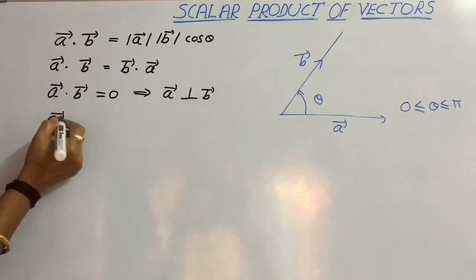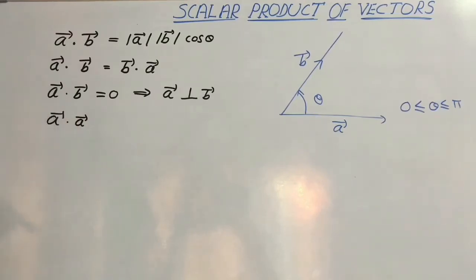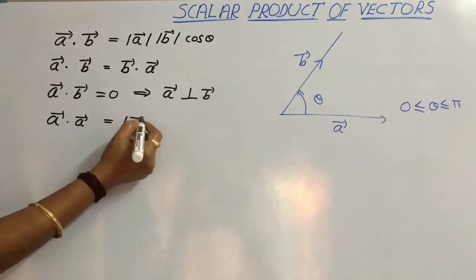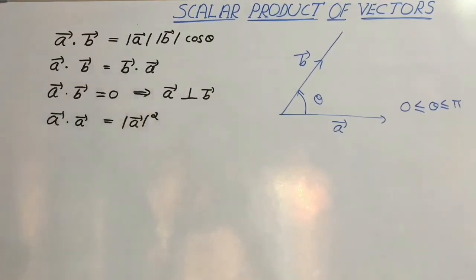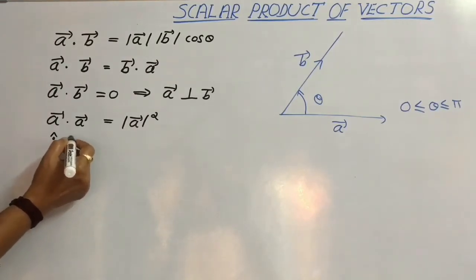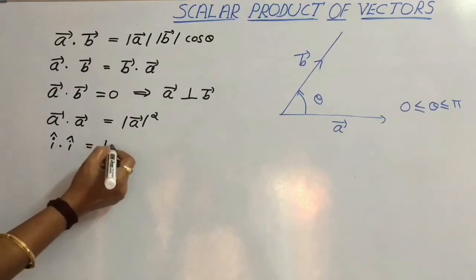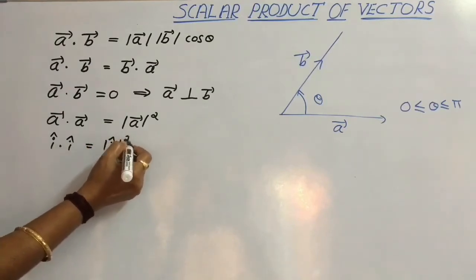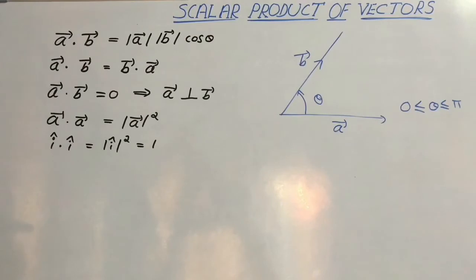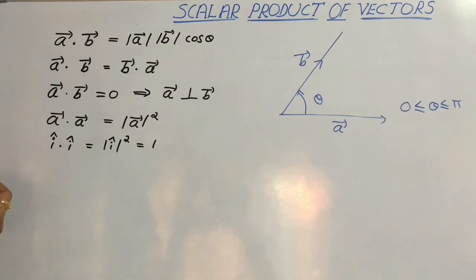If we consider the dot product between the same vector, that is vector A dot vector A, that is equal to mod of vector A squared. Similarly, i dot i equals mod i squared equals 1. Similarly, j dot j equals 1 and k dot k also equals 1, where i, j and k are the unit vectors along the X, Y and Z axes.